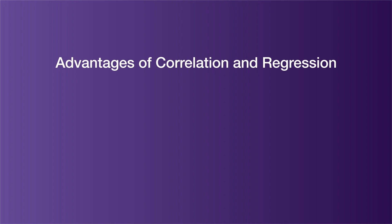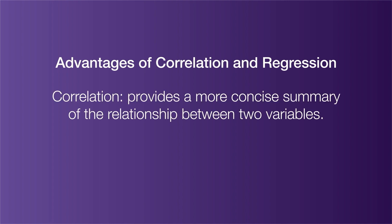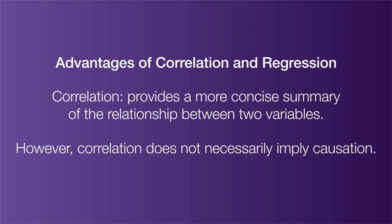Now the advantages of each. A key advantage of correlation is that it provides a more concise summary of the relationship between two variables. As a result, many correlations can be viewed together at the same time in one table, as seen with the Major League Baseball correlation chart. One warning, however: when interpreting correlations, you should be aware that correlation does not necessarily imply causation.